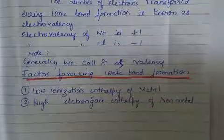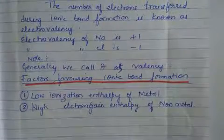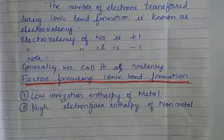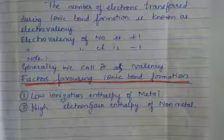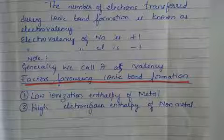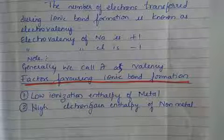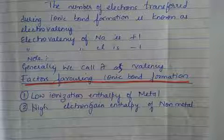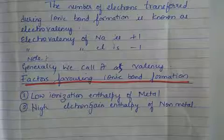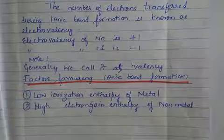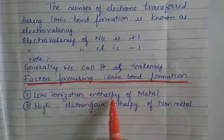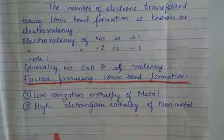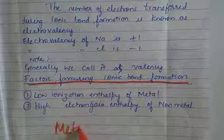In the previous video we saw what is an ionic bond. It is a bond formed by complete transfer of electrons. The nature of the bond is very strong and electrostatic forces of attraction are present between the atoms. Now, what are the factors which favor the formation of ionic bond? One is low ionization enthalpy and high electron gain enthalpy. Ionic bond is formed between metal and non-metal.